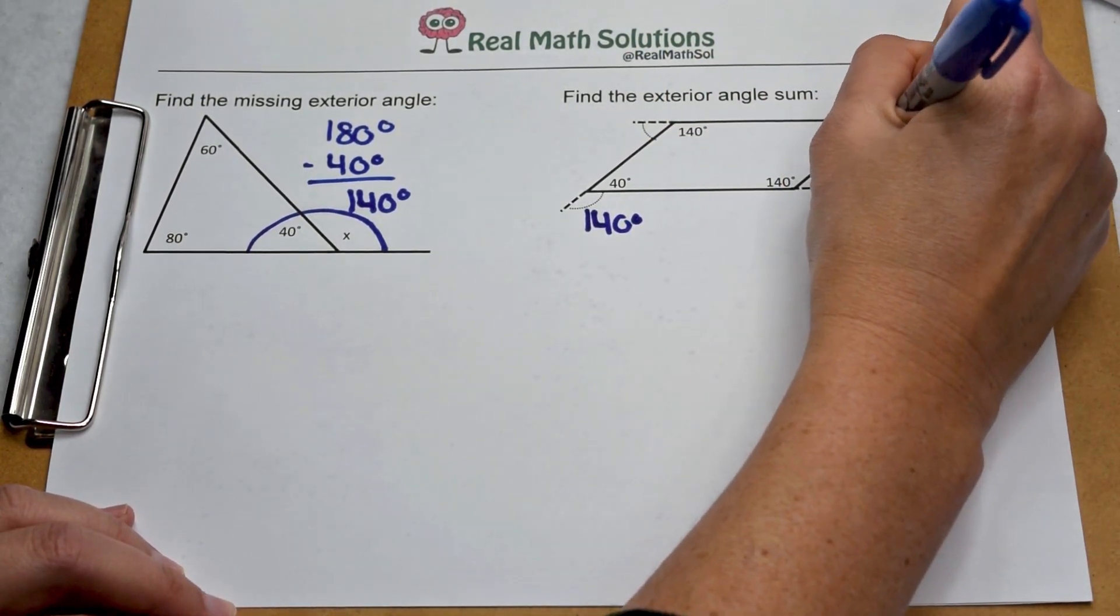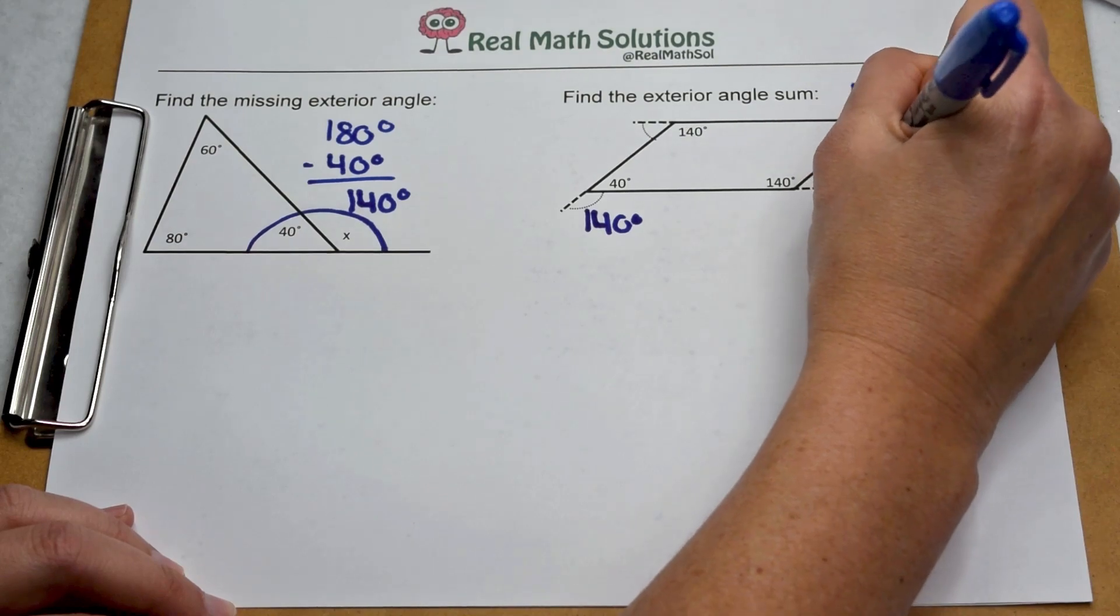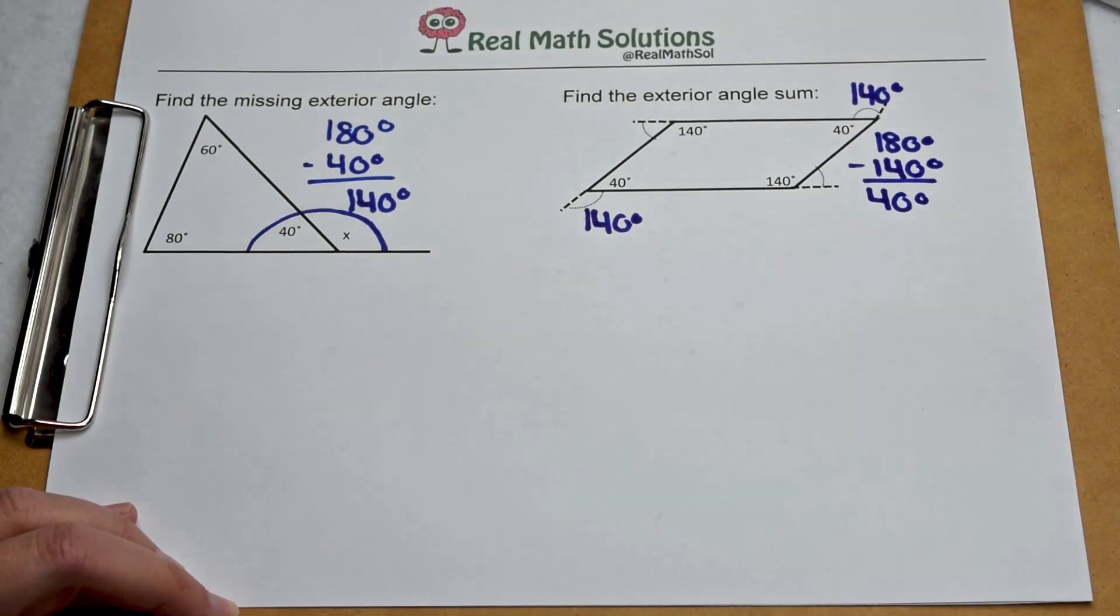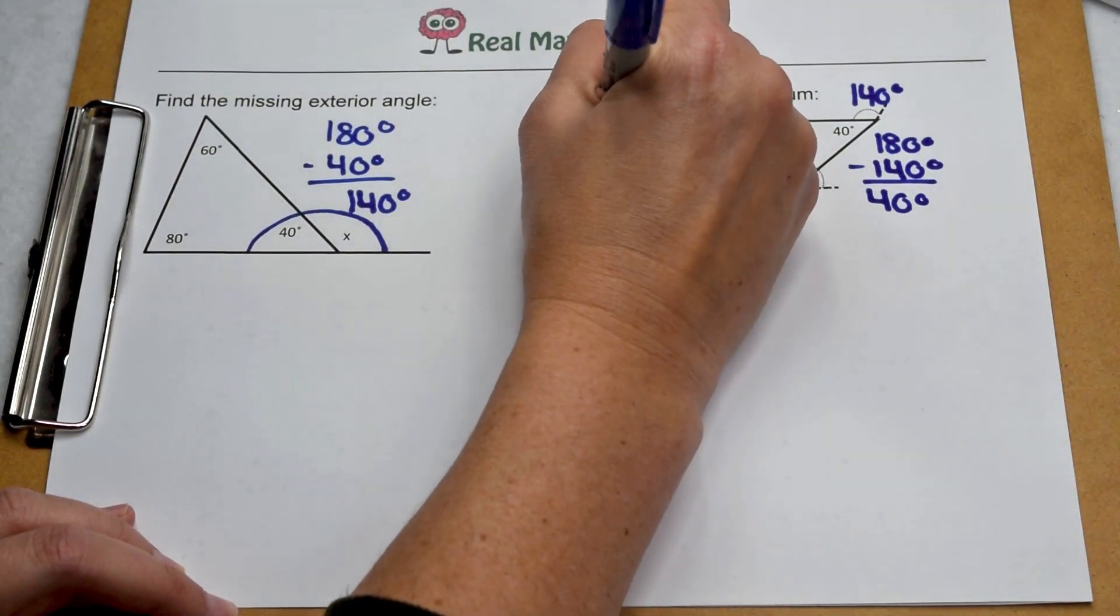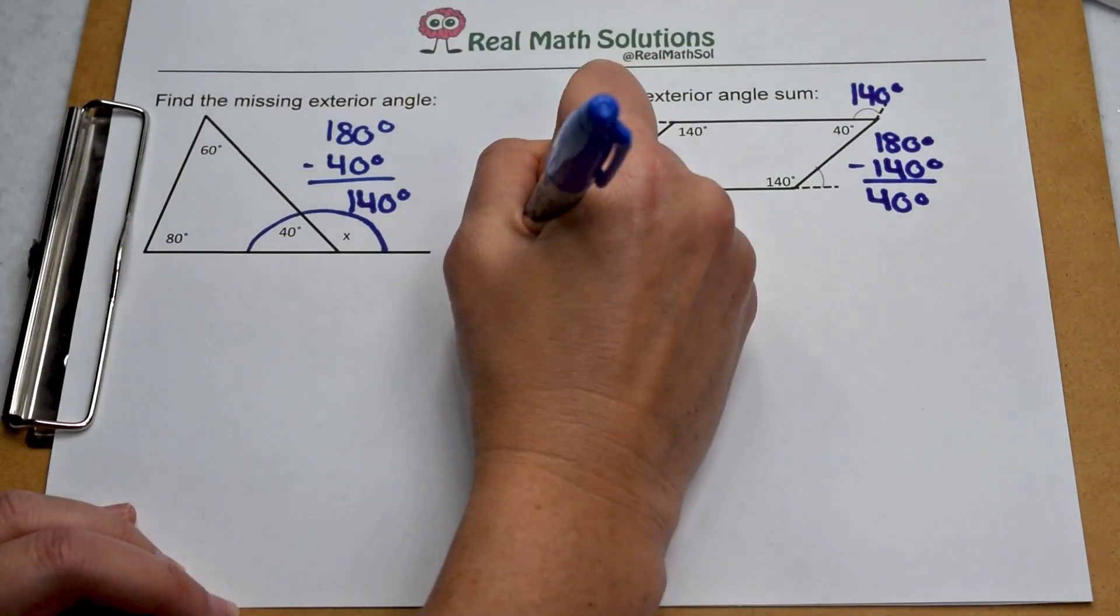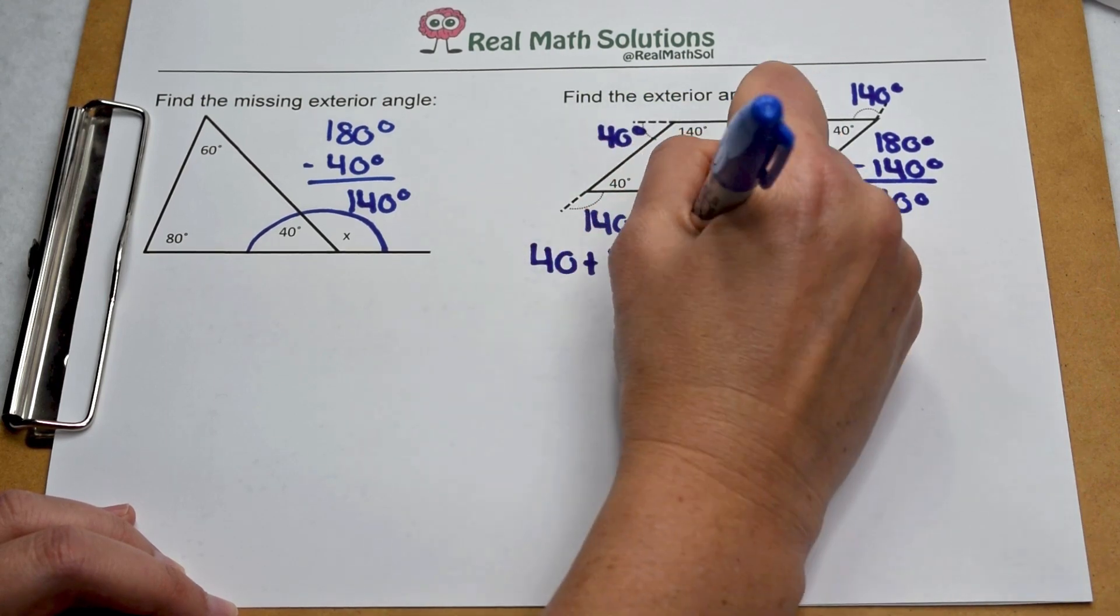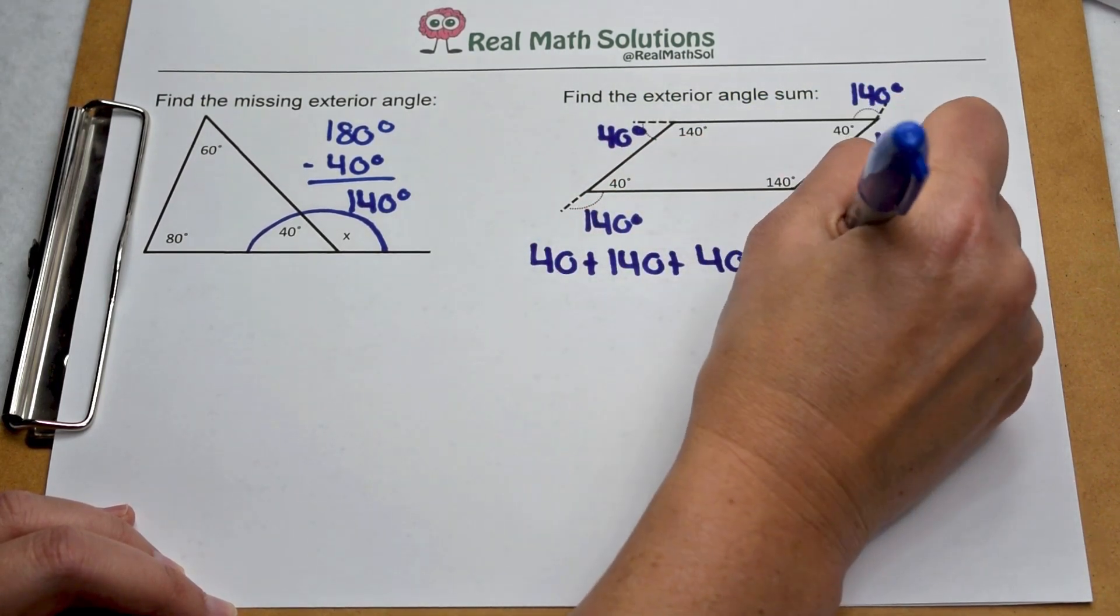For the others, 180 degrees minus the interior angle of 140 is going to leave me 40 degrees for the exterior angle. So these two exterior angles are 40. To find our exterior angle sum, we can add 40 plus 140 plus 40 plus 140, and when we do that, that adds up to 360 degrees.